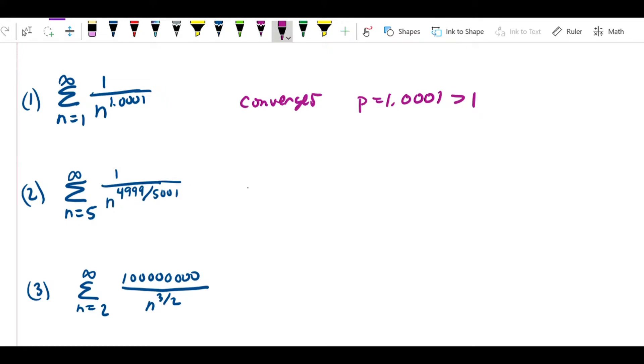For number 2, we can say that it diverges. How do we know? Because it's clearly a p-series. p is equal to 4999 over 5001, which is less than or equal to 1, and once again, that's all we need to know.